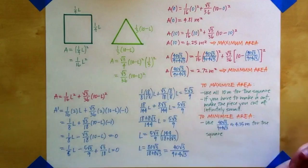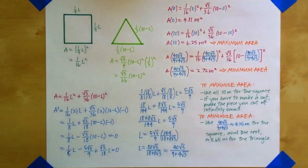To minimize total area, the length of the piece of wire we use to make the square should be the length given by our critical point, approximately 4.35 meters. The rest, about 5.65 meters, should be used for the triangle.